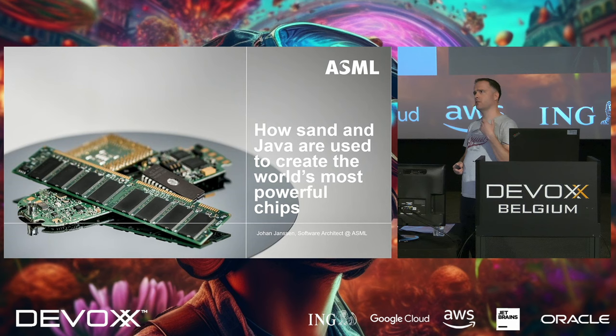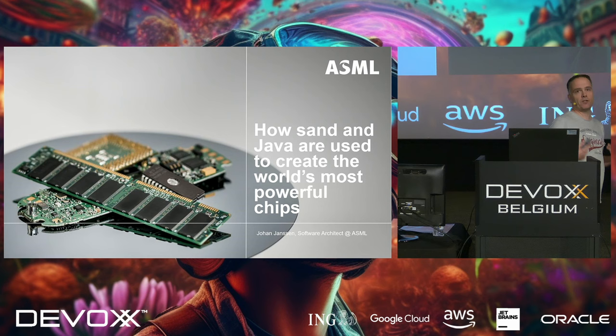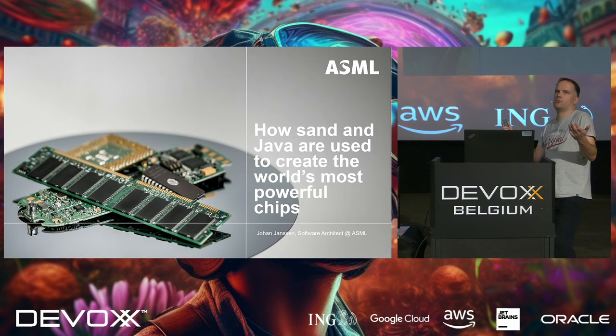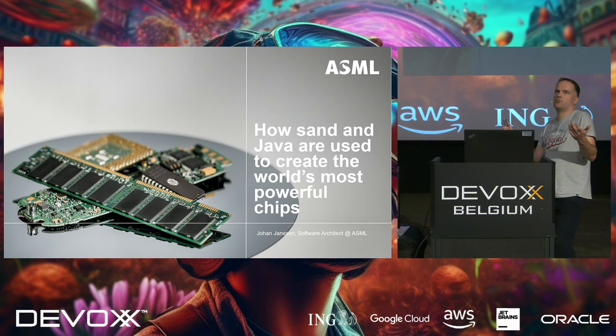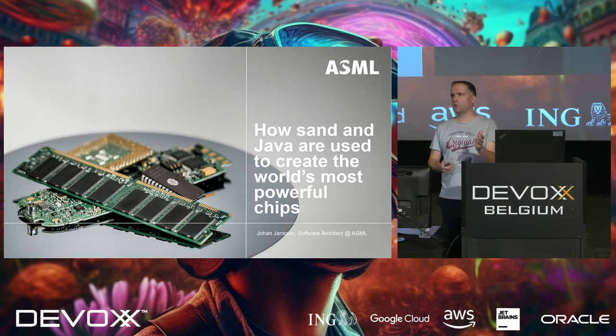I started about one and a half years ago at ASML. ASML creates the machines that chip manufacturers use to produce chips. We sell our machines to companies like Intel, Samsung, TSMC — for example, who makes the chips for Apple. Probably most of you use those. During the time that I started there, I learned quite a bit about how chips are created, and I realized I never knew much about it, even though I've been using them for as long as I can remember. I thought maybe this is also interesting for other people to know, so that's basically why I created this session.